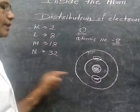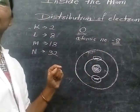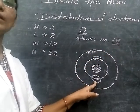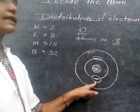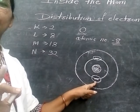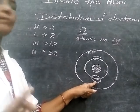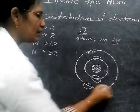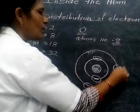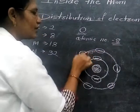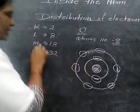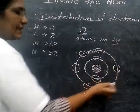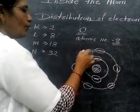Now, how many electrons are remaining? 8 minus 2, because we put 2 electrons in the first shell. Then 6 electrons are remaining. So these 6 electrons will go into the second shell, because the capacity of the second shell, which is the L shell, is 8 electrons. We place the remaining 6 electrons: 1, 2, 3, 4, 5, 6.